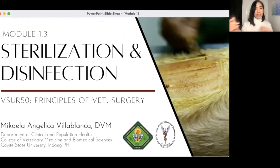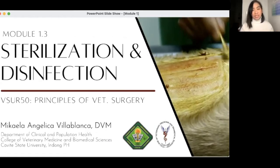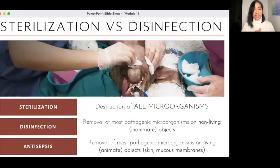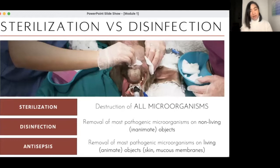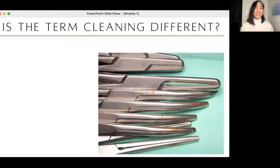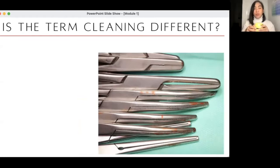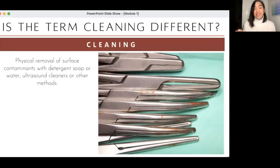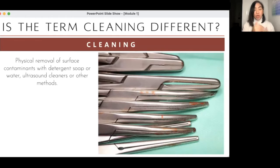We discussed asepsis, antisepsis, sterilization, and disinfection. Sterilization: all organisms are gone. Disinfection: removal of pathogens from objects. Antisepsis: for living things. Now, what is cleaning? Cleaning is the physical removal of surface contaminants using detergent soap or soapy water. For surgical instruments, cleaning can also be done with ultrasound cleaners, which use ultrasound waves to clean small parts like hinges that soap can't reach.